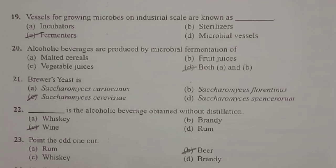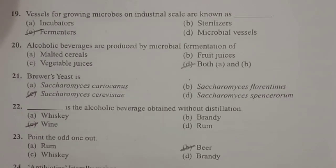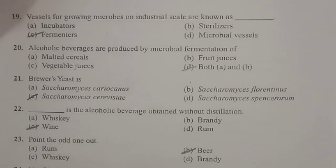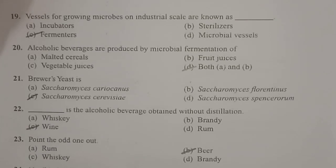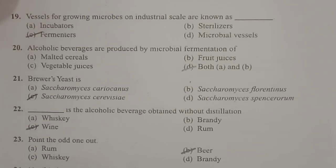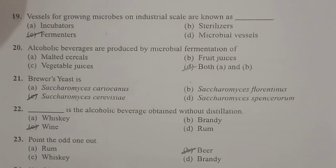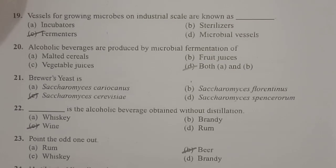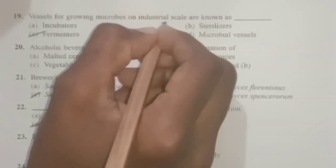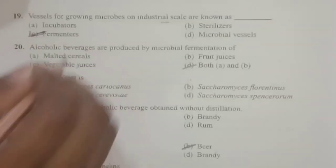Next: vessels for growing microbes on an industrial scale are known as fermenters. These are large vessels used for growing microbes at industrial scale. Whenever we want to produce a product on an industrial scale, we need to grow microbes in large quantities, which requires large vessels. Such large vessels used at industrial scale are known as fermenters.